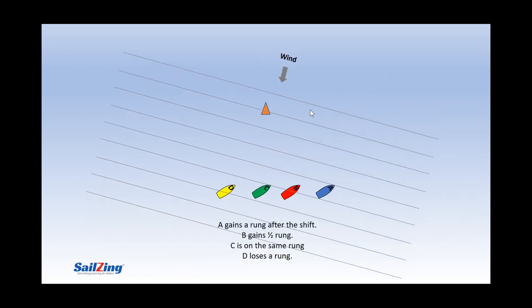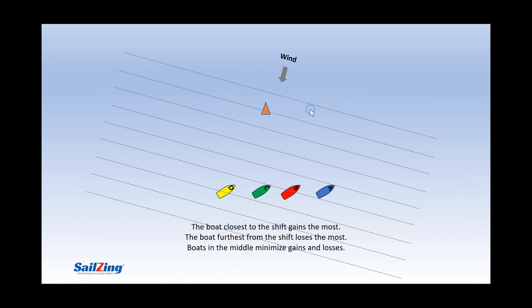A has gained a full ladder rung, B has gained half of a rung, C has stayed on the same rung, and D has gone backward one rung or more. So the key message is the boats closest to the shift gain the most, the boat furthest from the shift loses the most, and boats in the middle minimize gains and losses.